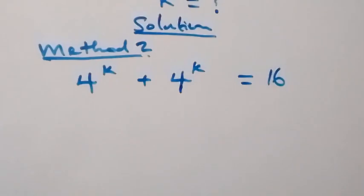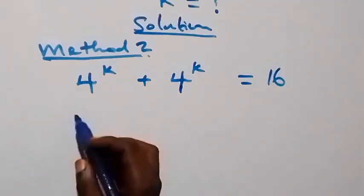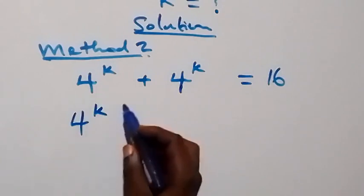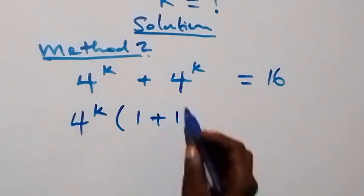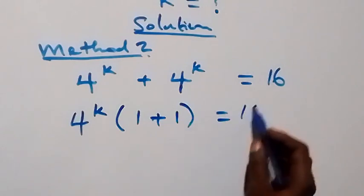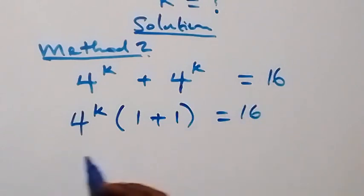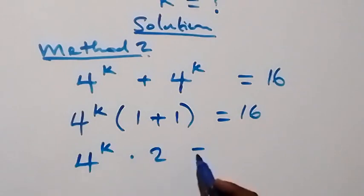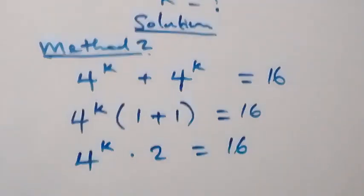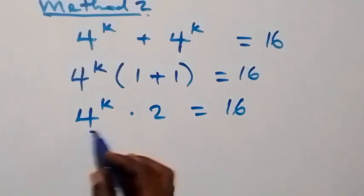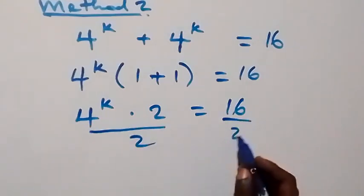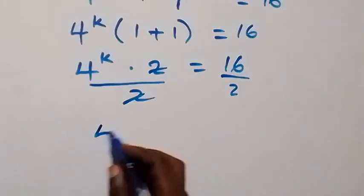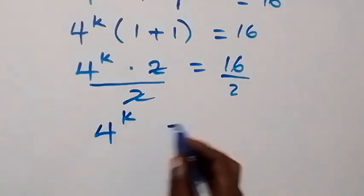Method 2: We also factor 4 raised to power k out. We have 1 plus 1 equals 16, which implies 4 raised to power k times 2 equals 16. Dividing both sides by 2, these 2s cancel each other, which implies 4 raised to power k equals 8.